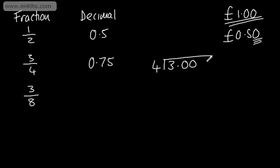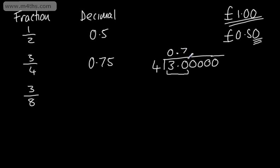I'm going to put 3.00 — I can put a few zeros on here; I won't need them all, but in some cases we might. The first question: does 4 go into 3? The answer is no, so we put a zero. I now ask myself, does 4 go into 30? The answer is yes — it's going to go in 7 times, which gives me 28, and that will give me a remainder of 2. Does 4 go into 20? The answer is yes, exactly 5 times, and we're finished.